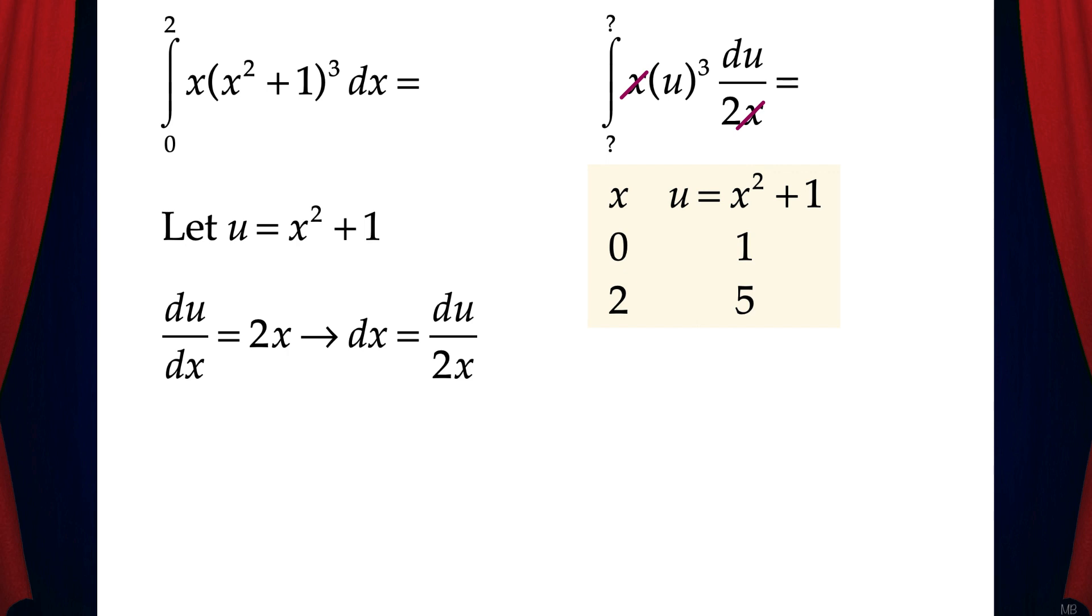And that gives us the integral that we need to solve: 1 half times the integral from 1 to 5 of u cubed du. Note that I moved the 1 half out of the integral because it's a constant multiplier. When we solve this, we get 1 half times u to the 4th over 4, which we'll evaluate from 1 to 5. And then if we apply the fundamental theorem of calculus, we get 78.